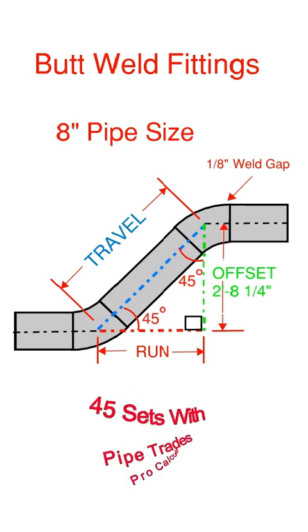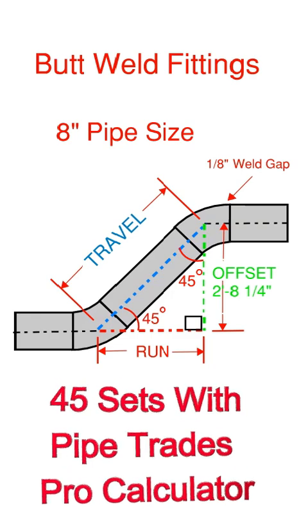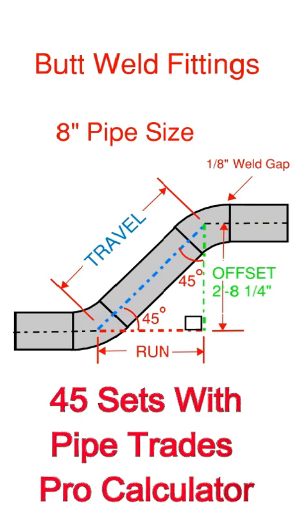We're dealing with 8 inch pipe size with the eighth inch weld gap. And we're going to be using the Pipe Trades Pro calculator to figure this 45 set. You can see the offset here is in green, and that's 2 foot 8 and a quarter. So I'm going to show you how to put this in the calculator.